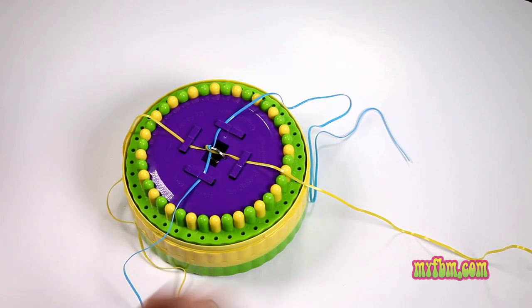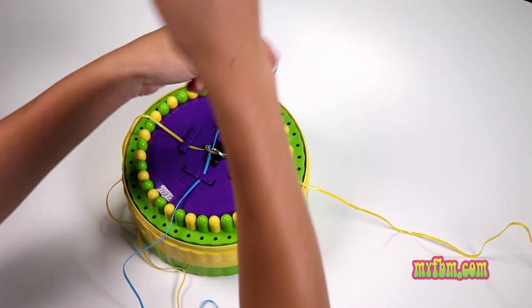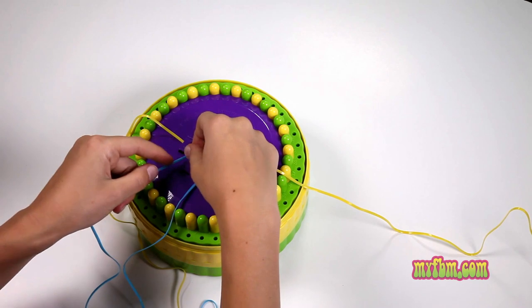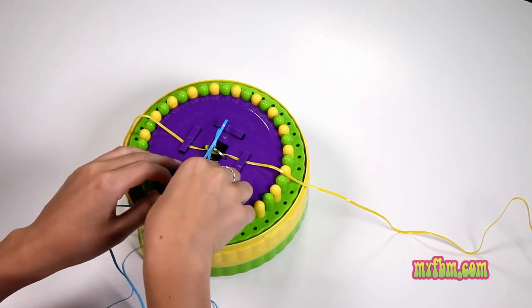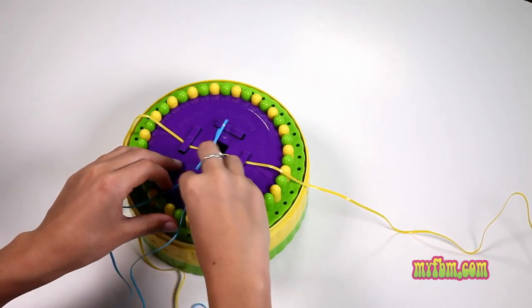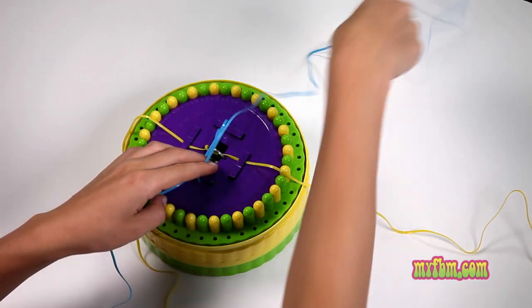To begin, take your number one, move it across and place it under the number six. Take your number five across the number two.